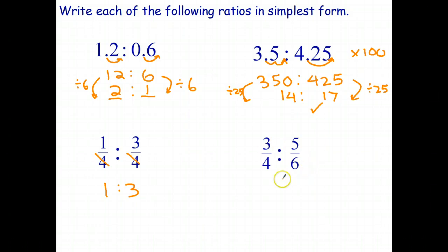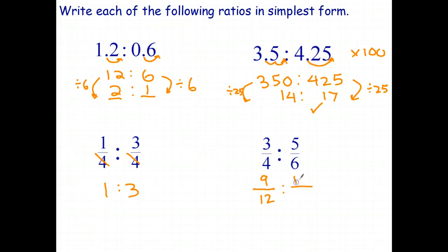If the fractions don't have a common denominator, you need to convert them to fractions with a common denominator. In this case I can turn three quarters into twelfths by multiplying by 3, giving nine twelfths. Then multiply top and bottom of the other fraction by 2 to get ten twelfths. The denominators are now the same, so the simplified ratio is 9 is to 10.